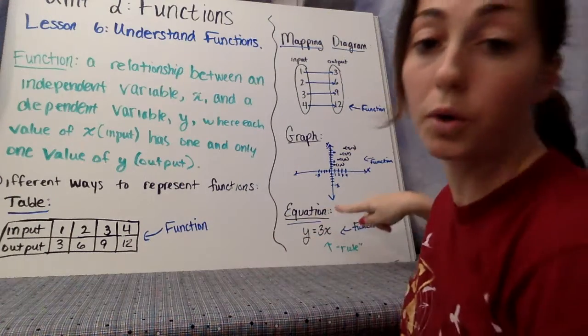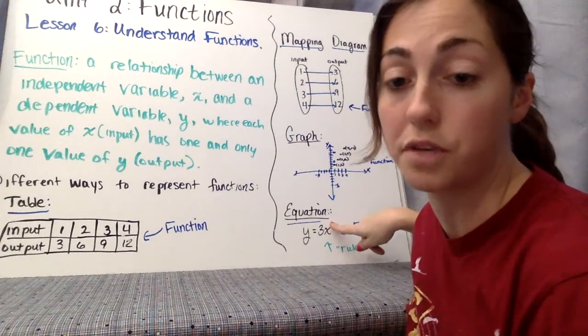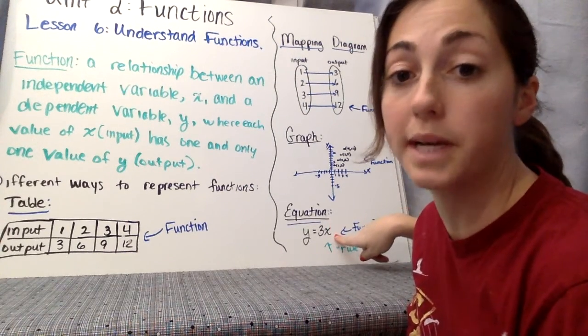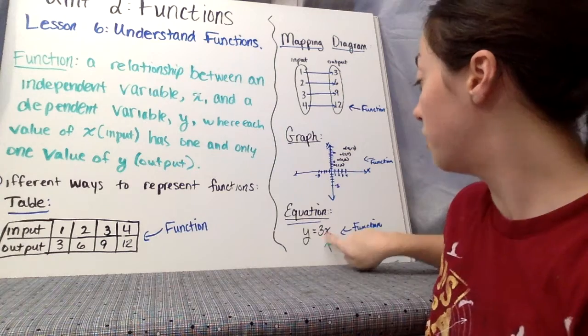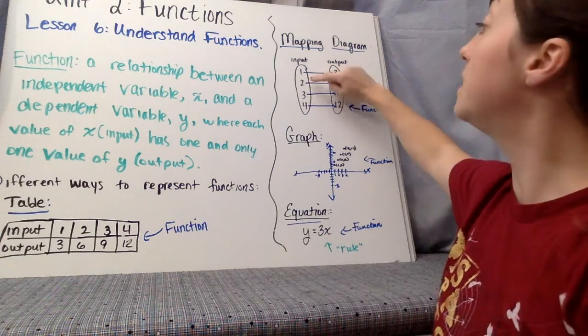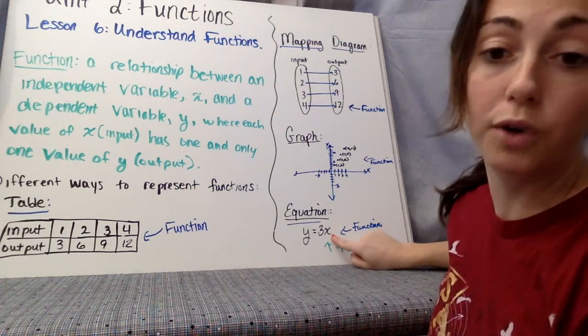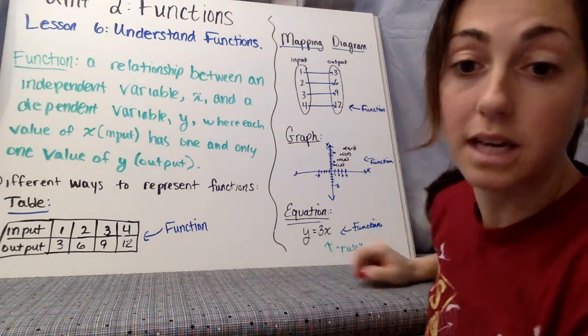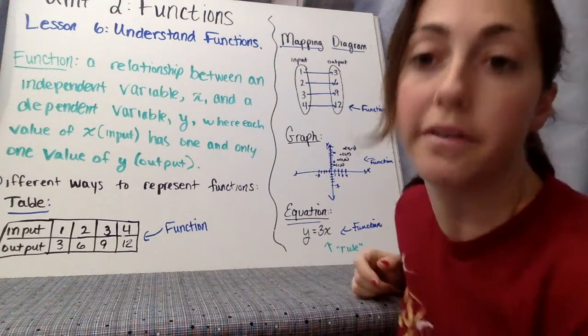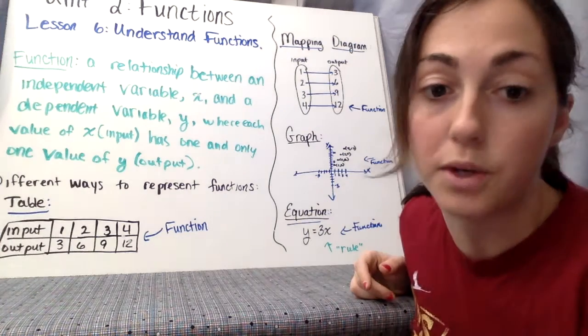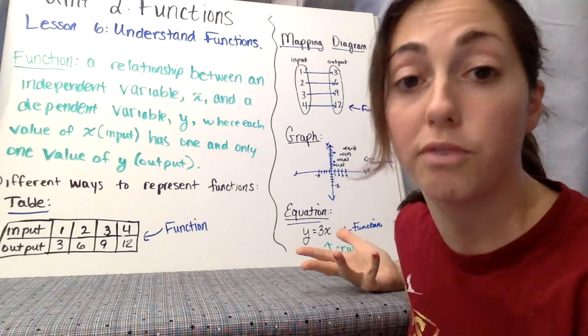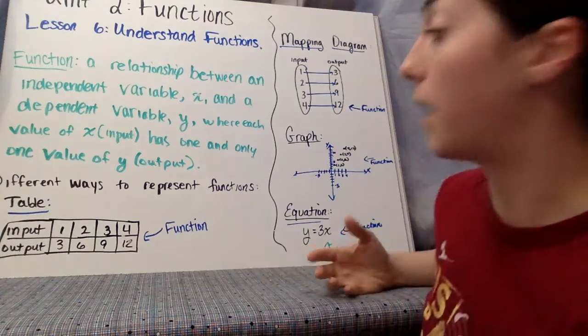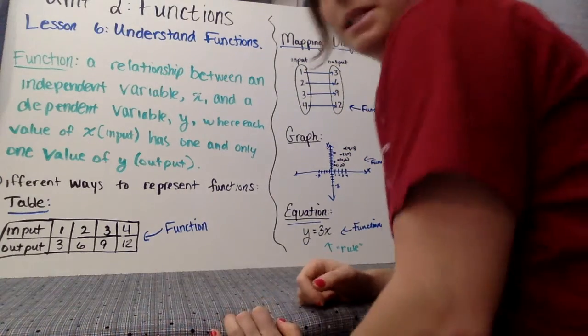And then here, our equation is also a representation of a function. y equals 3x is this representation, 3 times x. If we look at each input, say 2, if I input 2 for x, 3 times 2 is my output 6. So this is our rule. If you remember from elementary school, that's how you would always phrase these. You've been working with functions for a long time. Okay, so this is good. Let's talk about some other things.